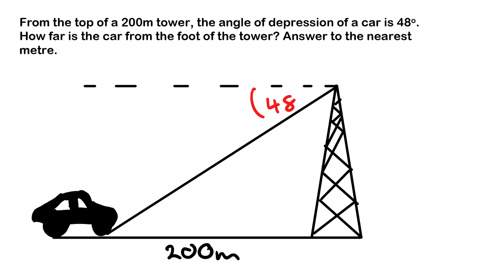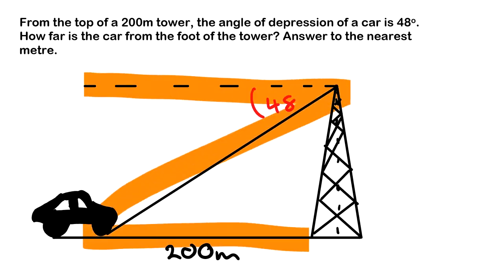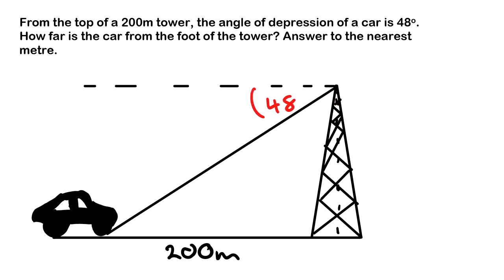We need the angle to be inside our triangle. This is a right angled triangle. So 48 degrees, we have what we call an alternate angle here, which means that this angle here is going to be 48.